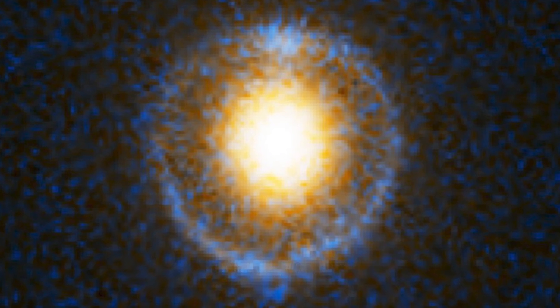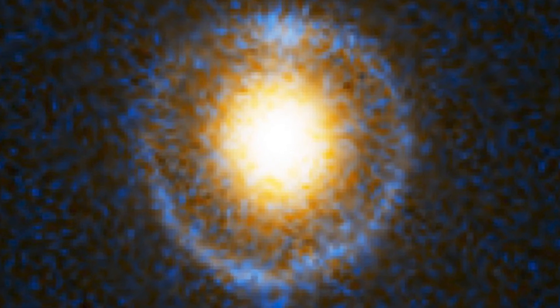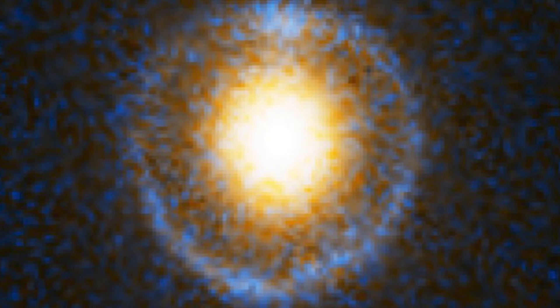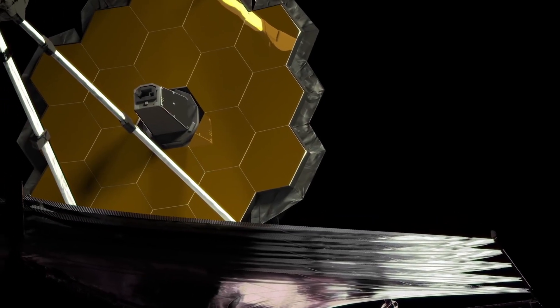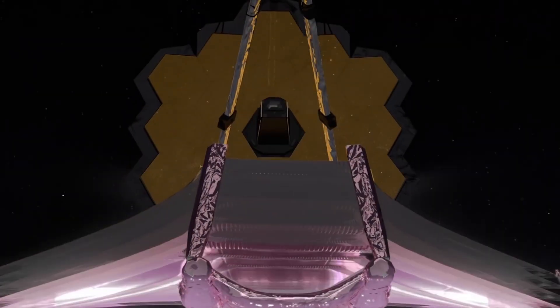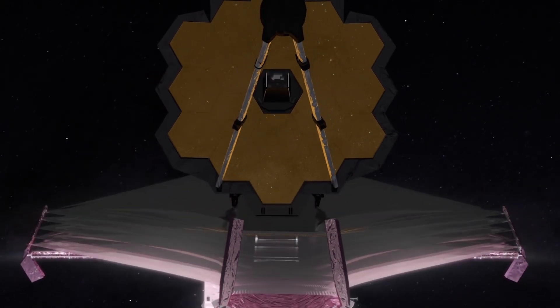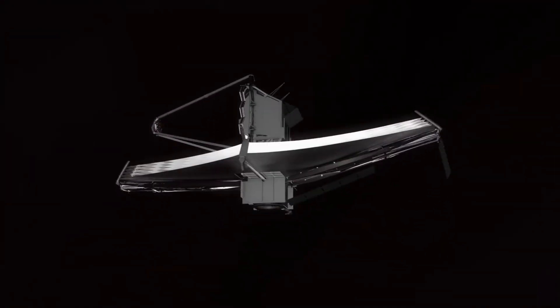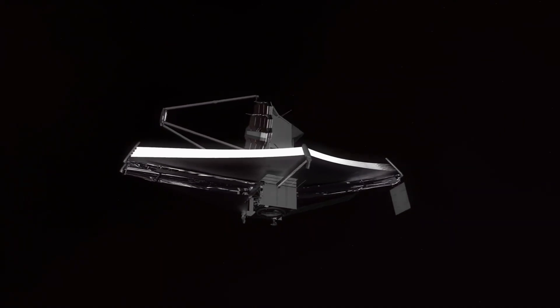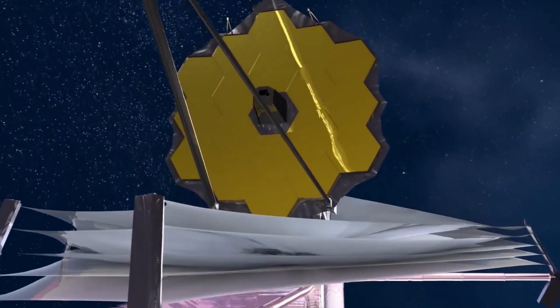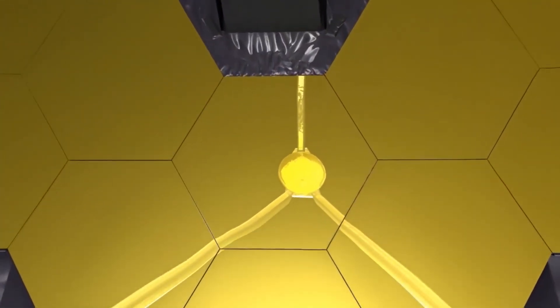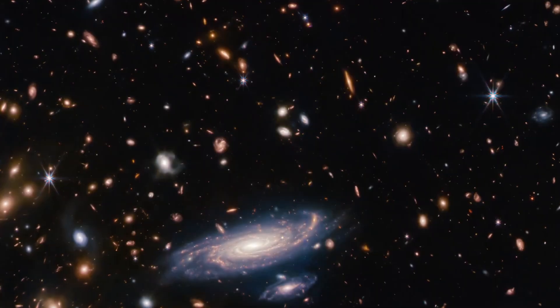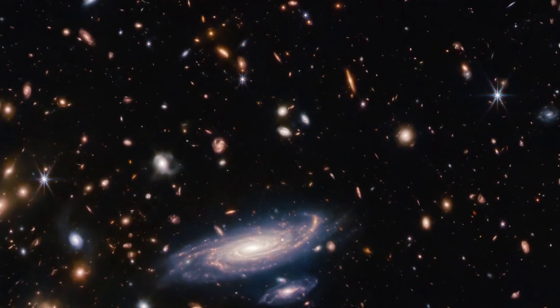This means that without the gravitational influence, we would not be able to detect the galaxy at rest, as it would be too faint and small to be observed by the James Webb Space Telescope or other telescopes. The question that arises is, how did James Webb discover this Einstein Ring? And what was the project that led to this amazing discovery?